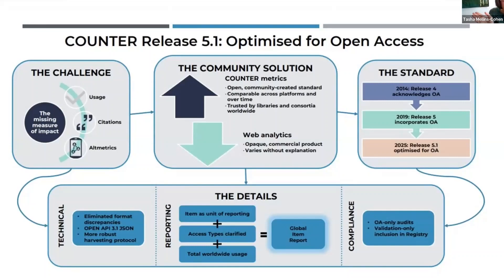It is not a substitute for human judgment. The reason that Counter was born is that web analytics, even back in 2003, were opaque commercial products that nobody really understood. It was not possible for libraries or publishers to see what was happening over time and be convinced that things were comparable, that their usage metrics were valid. So we pulled together a community of libraries, publishers, technology providers, and consortia to really define a community-created standard for measuring usage that could be trusted by everybody.